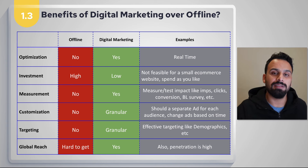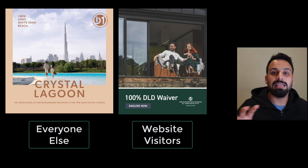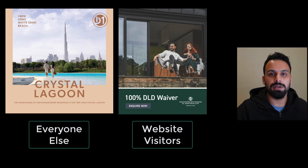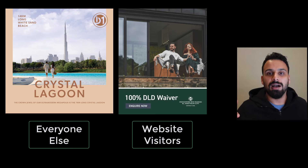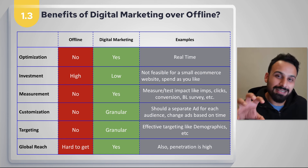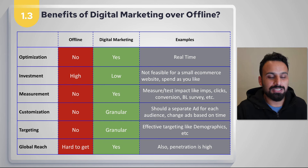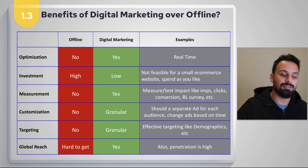Another customization example: for a real estate client, we showed an initial ad about villas, then created a separate campaign targeting people who clicked but didn't contact us, offering a DLD waiver if they made a booking. You can run separate ads for different audiences based on their interest level — the possibilities are extensive.